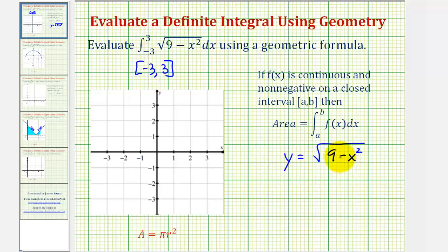Now we want to graph this, and to help us recognize how to graph this, let's go ahead and square both sides of the equation. So we'll square the left side and square the right side. This would give us y squared equals...